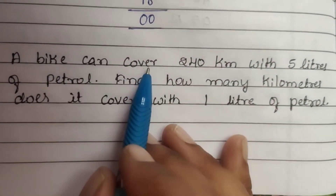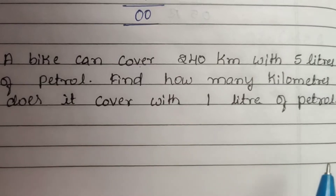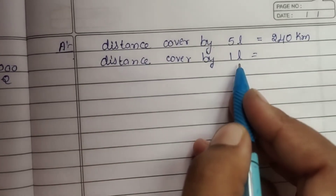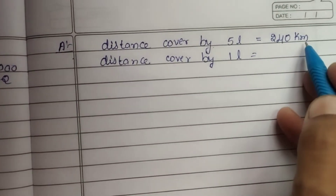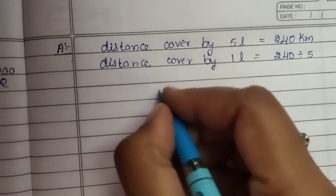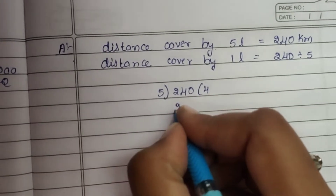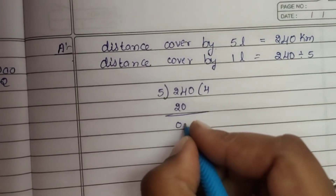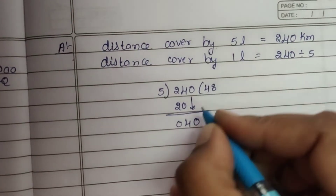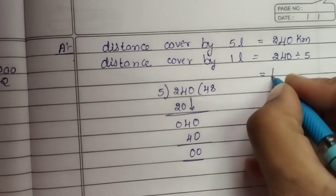Second question: a bike can cover 240 kilometers with 5 liters of petrol. Find how many kilometers it covers with 1 liter of petrol. Distance covered by 5 liters = 240 km. Divide 240 by 5: 5 ones are 5, 5 fours are 20, 2 minus 2 is 0, 4 minus 0 is 4. Bring down: 5 eights are 40, 40 minus 40 is 0. The bike covers 48 kilometers per liter.